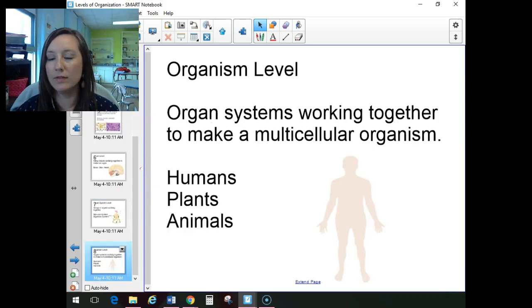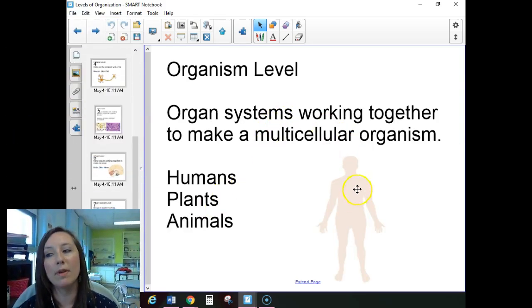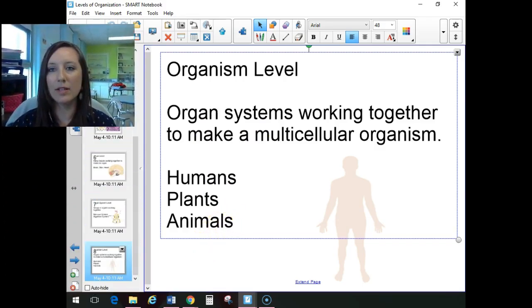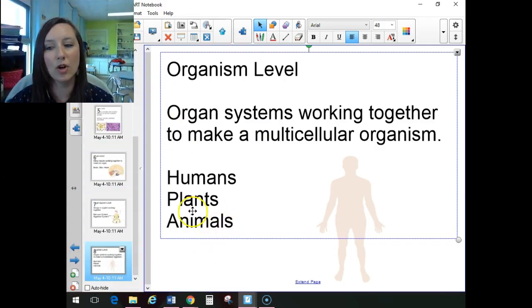Finally, all of those organ systems working together make an organism. Organ systems working together to make a multicellular organism. I want to emphasize that multicellular. Multicellular organisms are the only organisms that have that level of organization. Our unicellular organisms, they do it all just within them. They're not going to have tissues or organ systems or anything like that. So our organisms would be humans, plants, and animals.